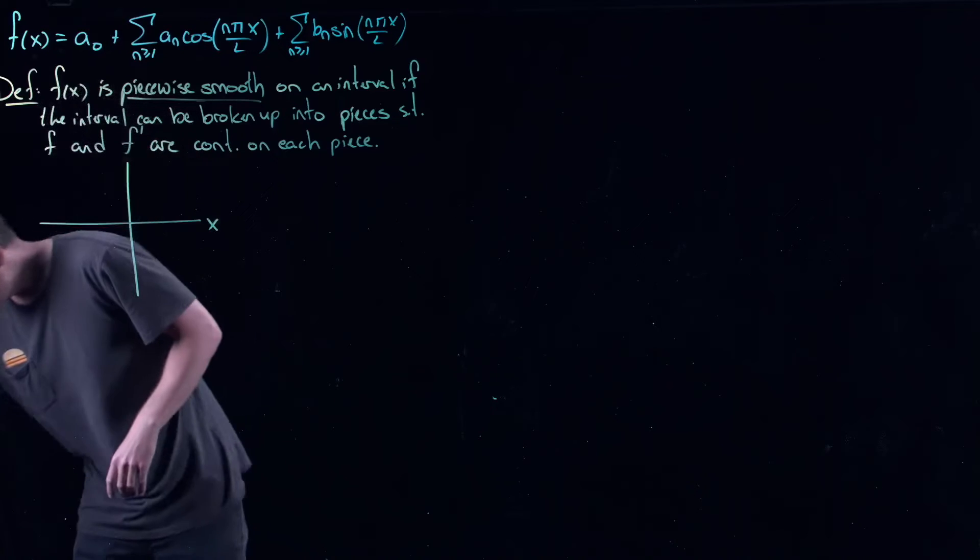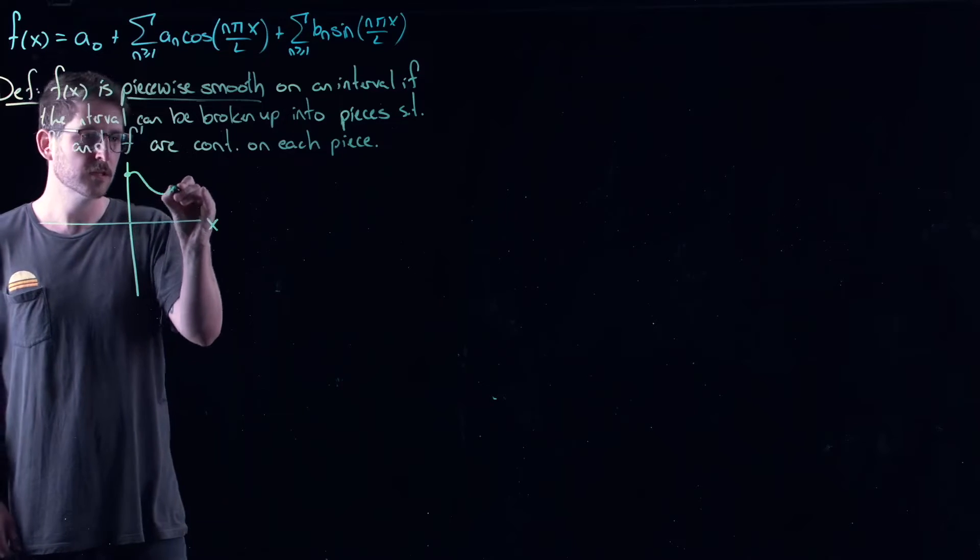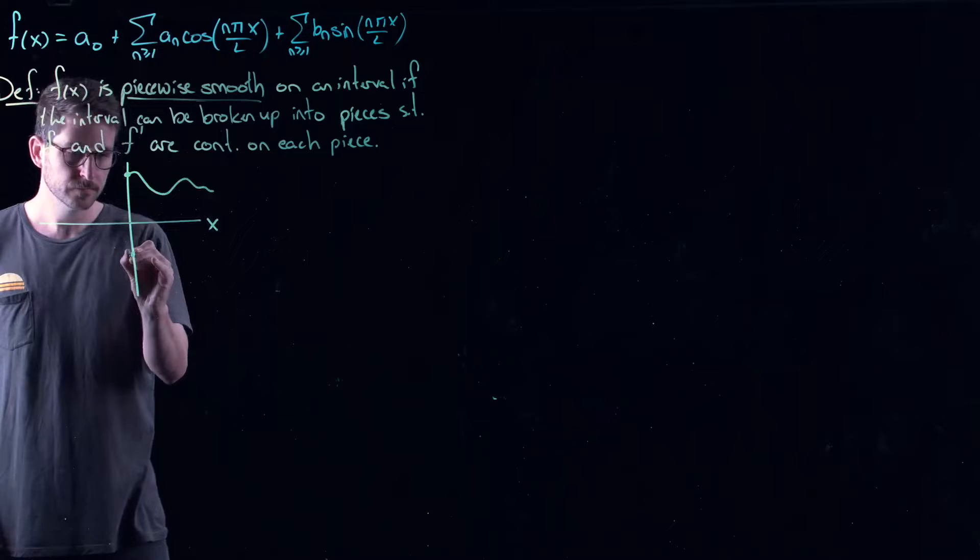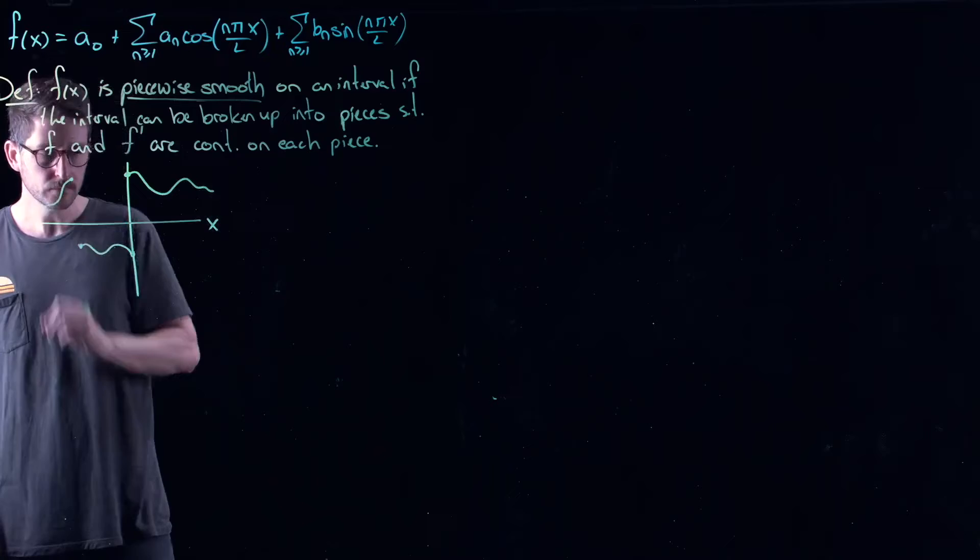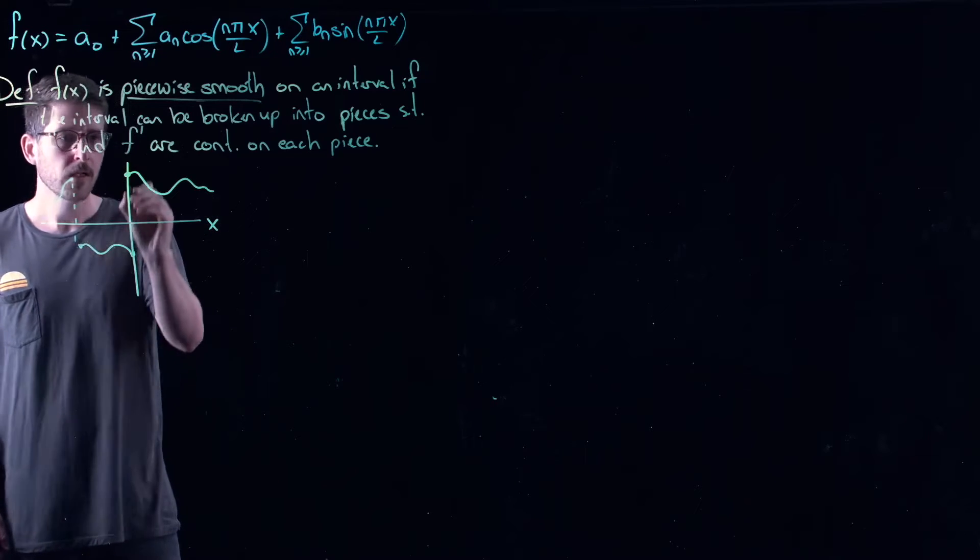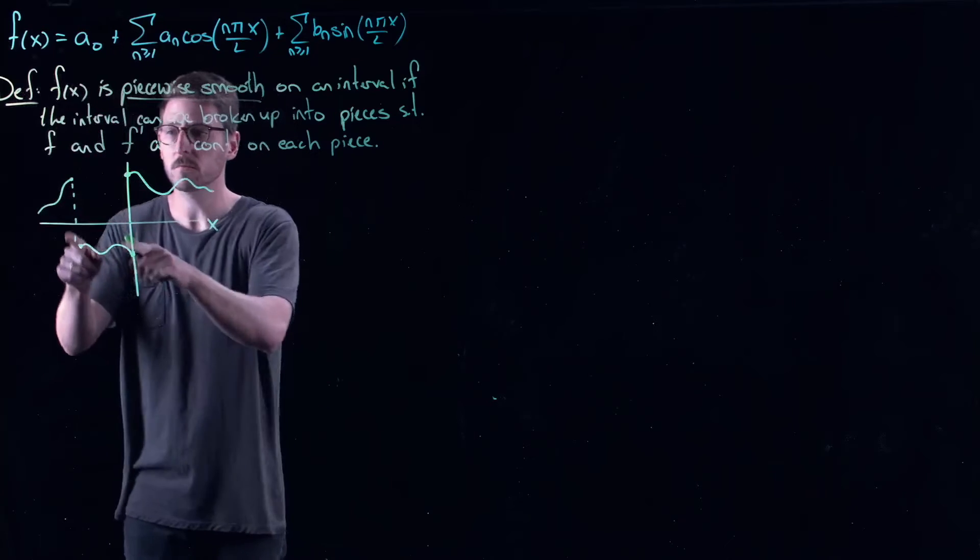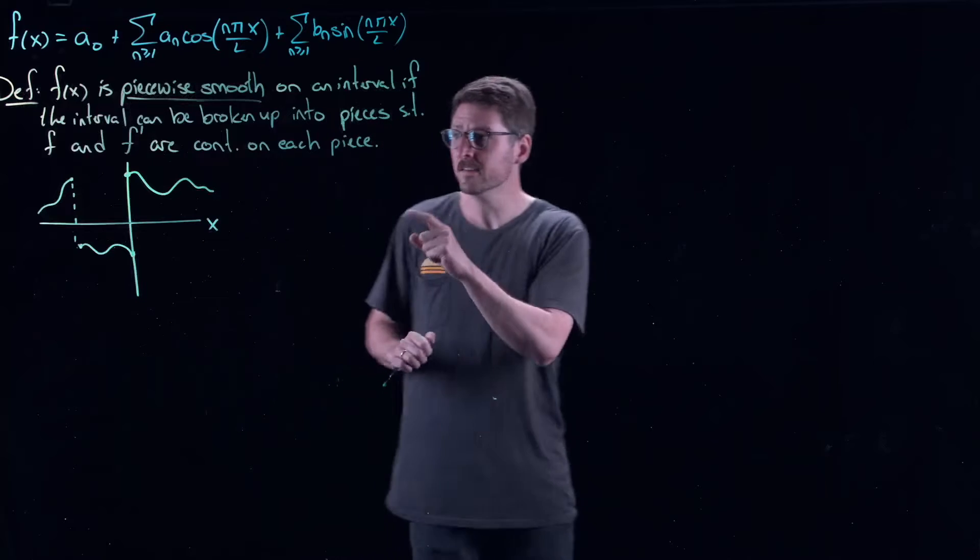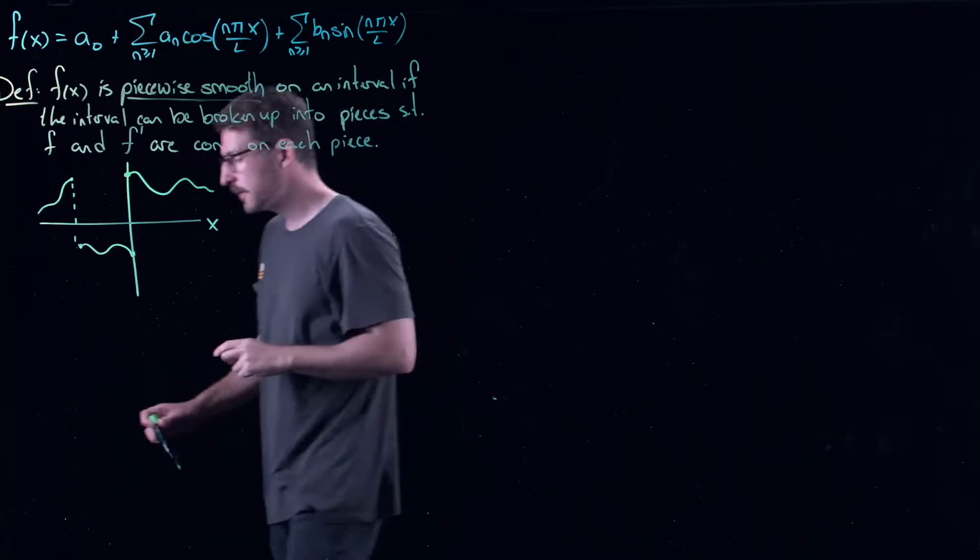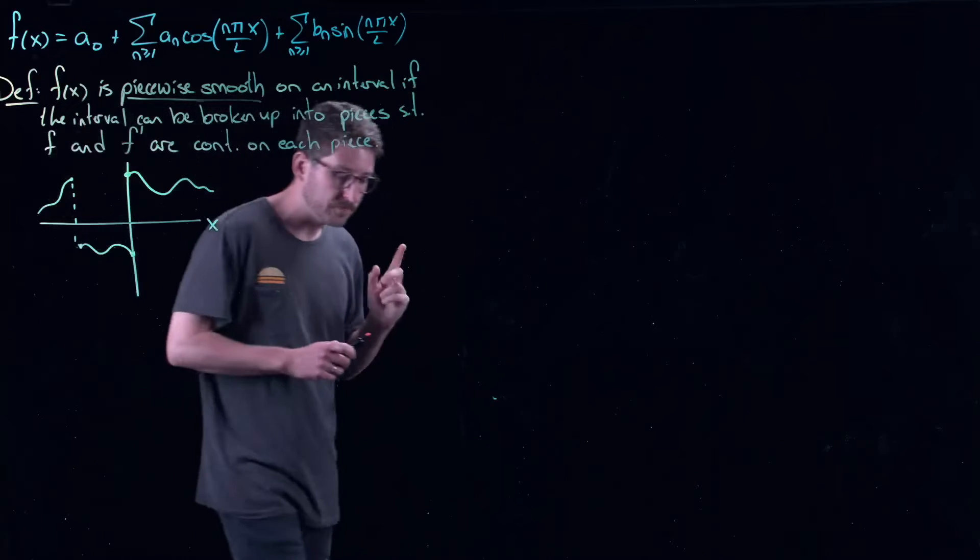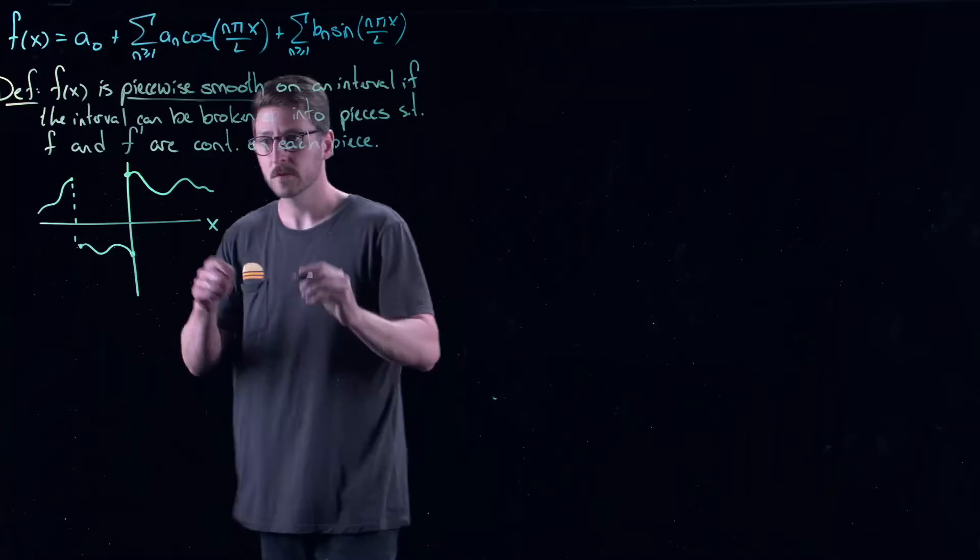Let's take a look at an example here. What you can see here is that this domain of x is broken up into three components. On each one of these sub-components I have a smooth function, but I have these jump discontinuities. Essentially what a piecewise smooth function is, is it's a function that can only have jump discontinuities. That's what we're going to be looking at. So this one's good.